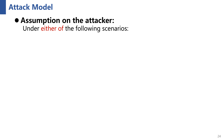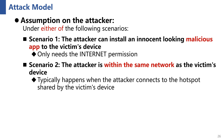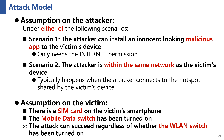We assume the adversary can perform the attack under either of the following two scenarios. In the first scenario, the attacker can install an innocent-looking malicious app on the victim's device. In the second scenario, the attacker is within the same network as the victim's device, which typically happens when the attacker connects to the hotspot shared by the victim's device. In both cases, we assume the victim is under the legitimate usage scenario of One-Type Authentication — specifically, a SIM card is present and mobile data is turned on.